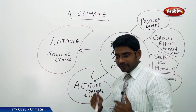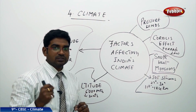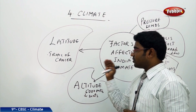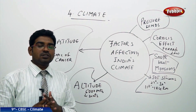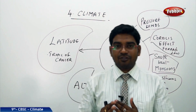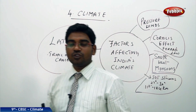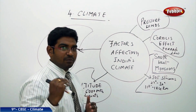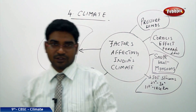India has one important tropic passing through it, that is the Tropic of Cancer. The Tropic of Cancer passes through the Rann of Kutch in Gujarat towards the eastern part of India. So half of India falls into the tropical zone, while the other half falls into the subtropical zone. India rightly has a mixture of tropical and subtropical climate effects.